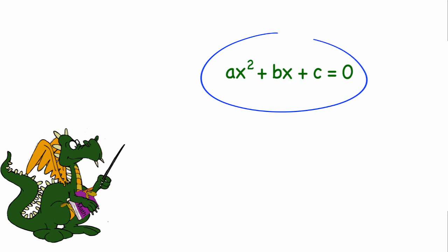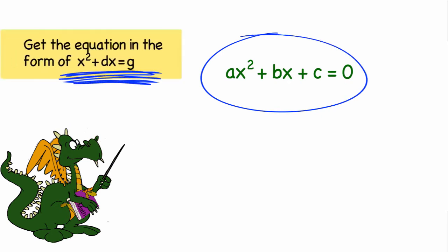The first step is we want to get the quadratic equation into the form of x squared plus dx equals g. If you've watched the other videos or seen this in books, you may see that we've used different variables to represent our constants. I did that so we wouldn't confuse the variables in the quadratic equation with the variables we use for the steps of completing the square.